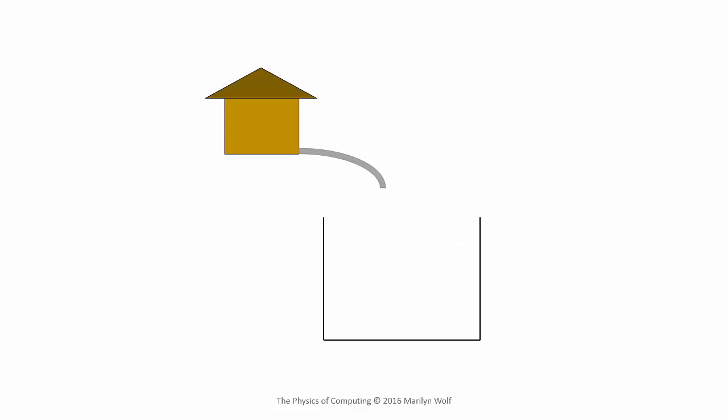An analogy that we often use to understand the operation of the inverter circuit is filling a swimming pool from a water tower. The size of the pool determines its capacity. The height of the water tower above the swimming pool is equivalent to voltage in our circuit, and the water flowing through the pipe from the water tower into the pool is equivalent to current.